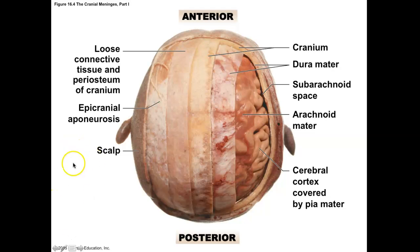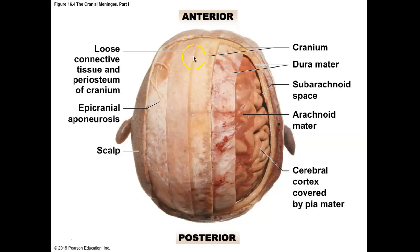Looking at all the layers from skin to brain: we have the scalp, then an epicranial aponeurosis — the sheet-like tendon binding the frontalis to the occipitalis muscle — then some periosteum covering the bone, then the bone itself. Underneath the bone we have the meninges. The most superficial is the dura mater, the second is the arachnoid mater, and the third — very delicate and nearly invisible — is the pia mater.